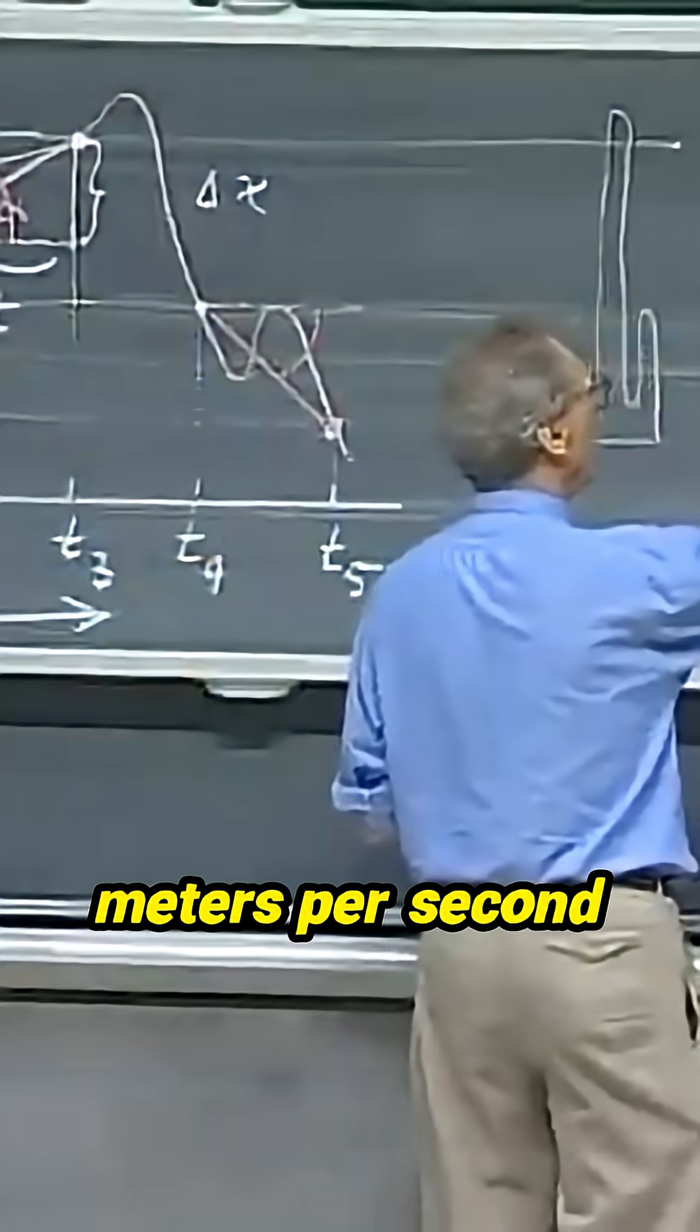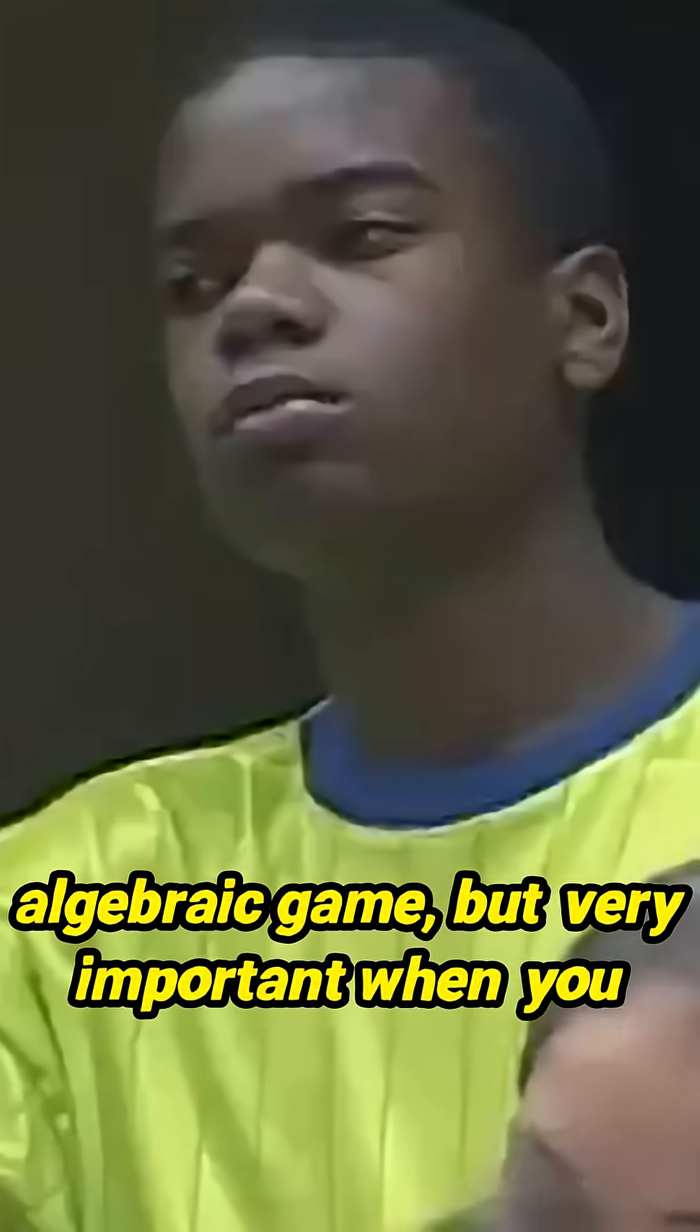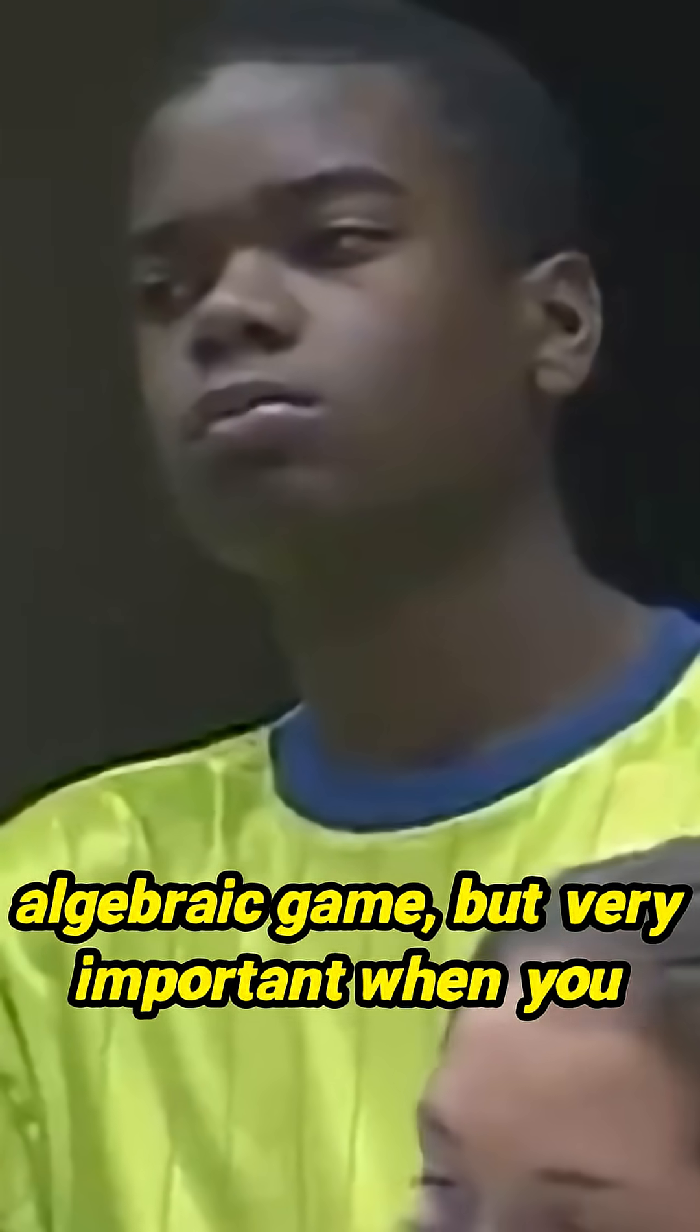So this has the highest speed of 100 meters per second, and this has a lower speed, but this has the lowest velocity. It's just an algebraic game, but very important when you make your calculations.